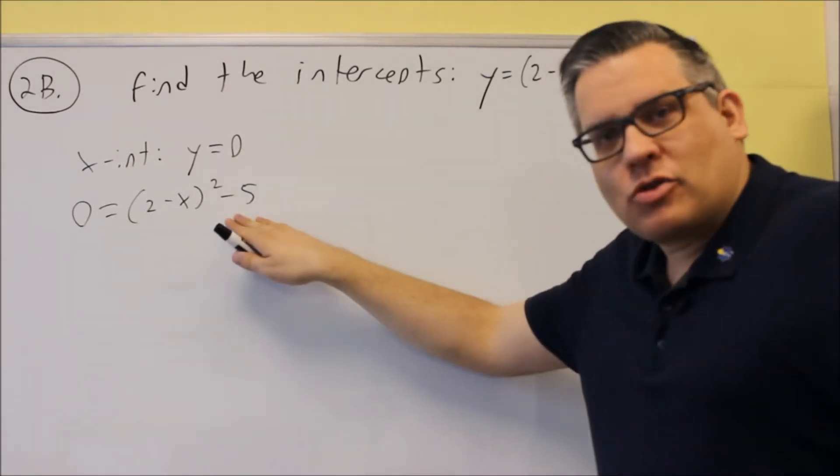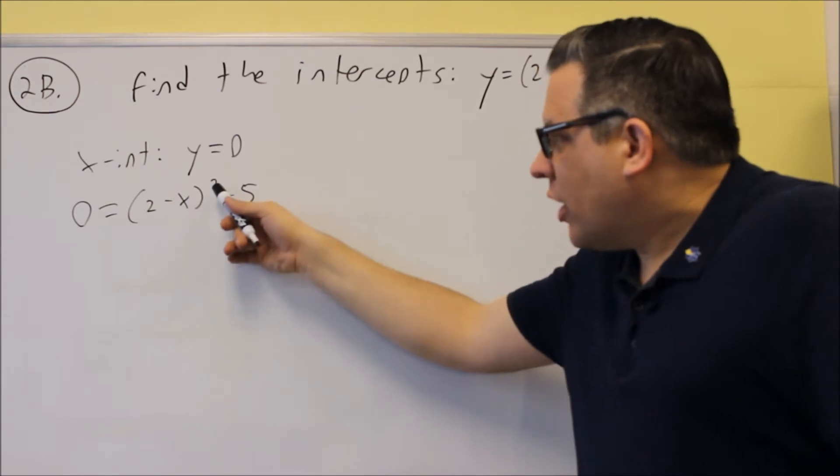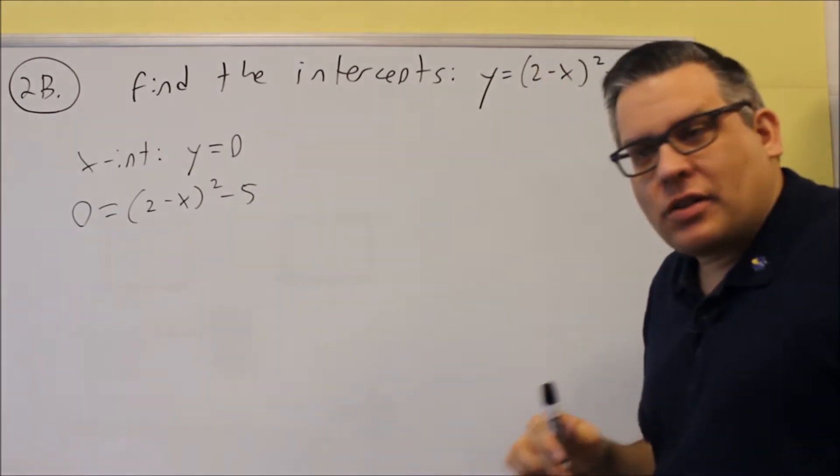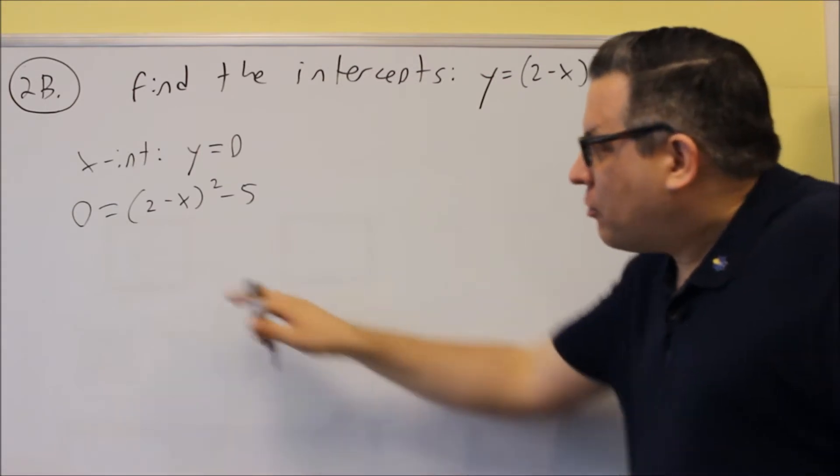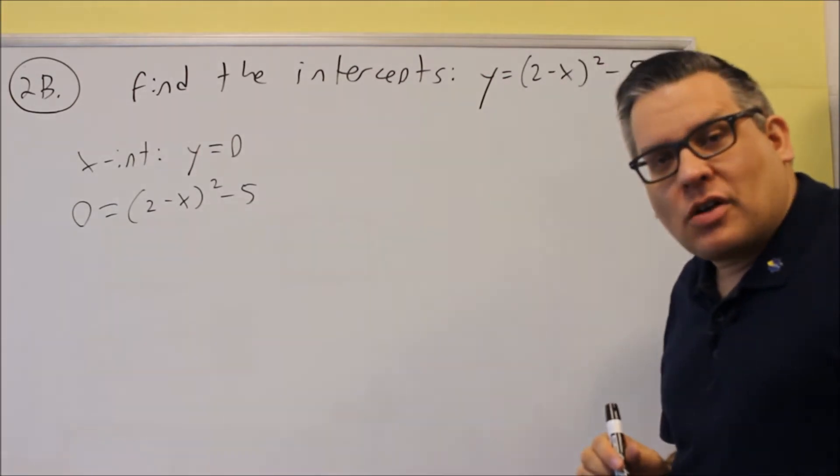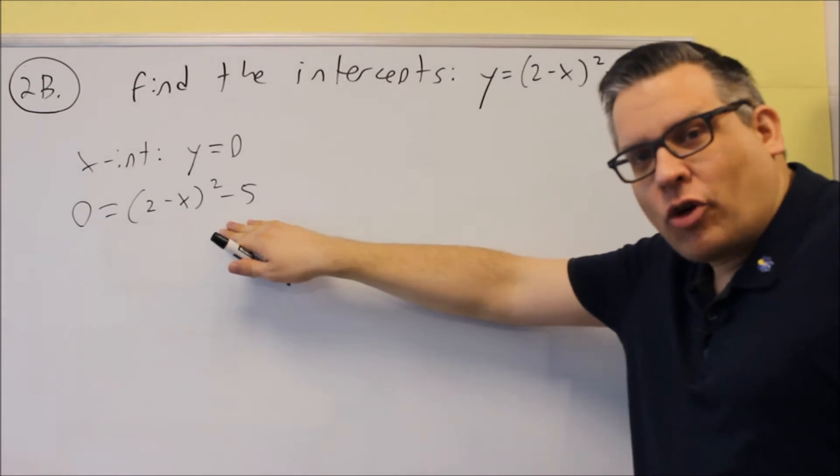Look at the way this one's written. We got a quantity squared. Whenever you see something like that, a quantity squared, you want to use the square root principle on that, square root property, because that's going to make it a lot easier to solve because it's in that form.